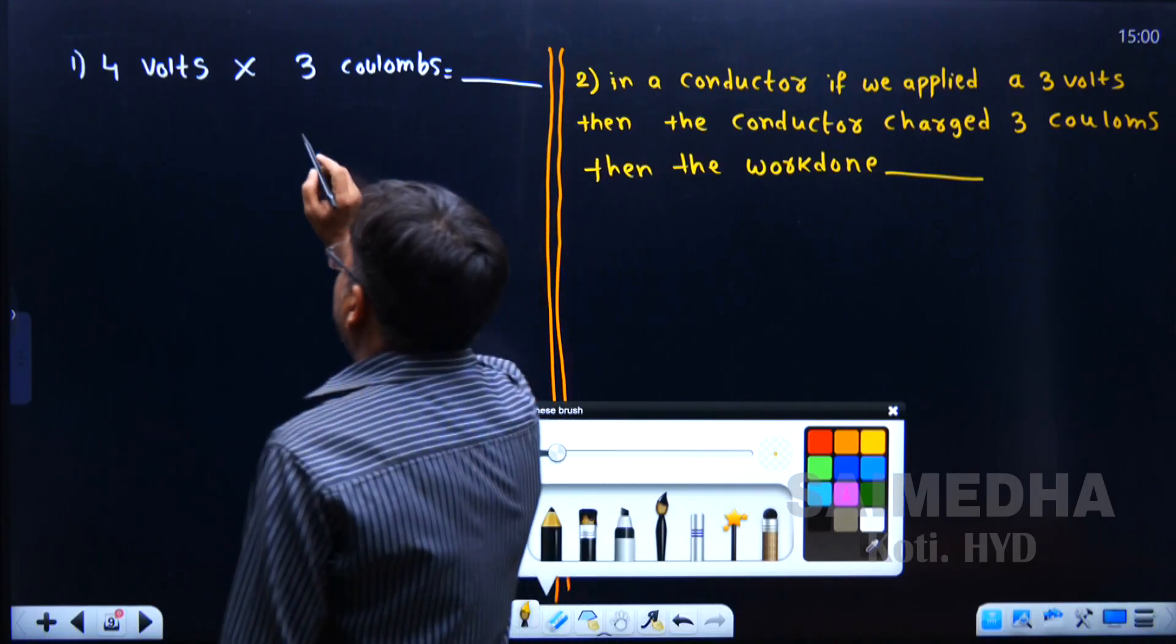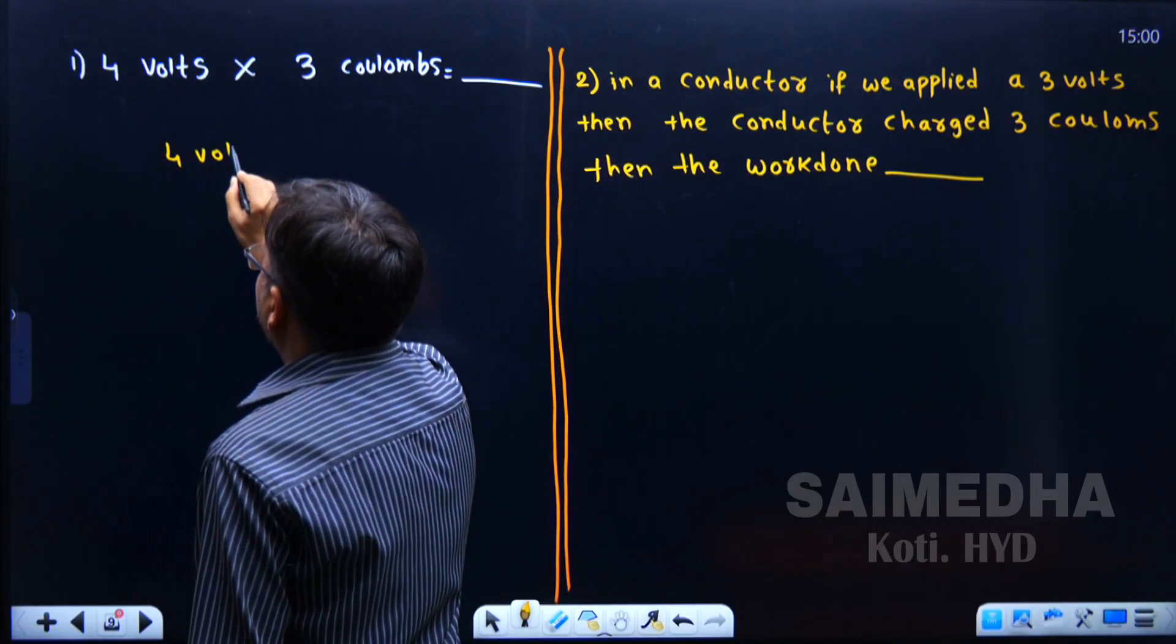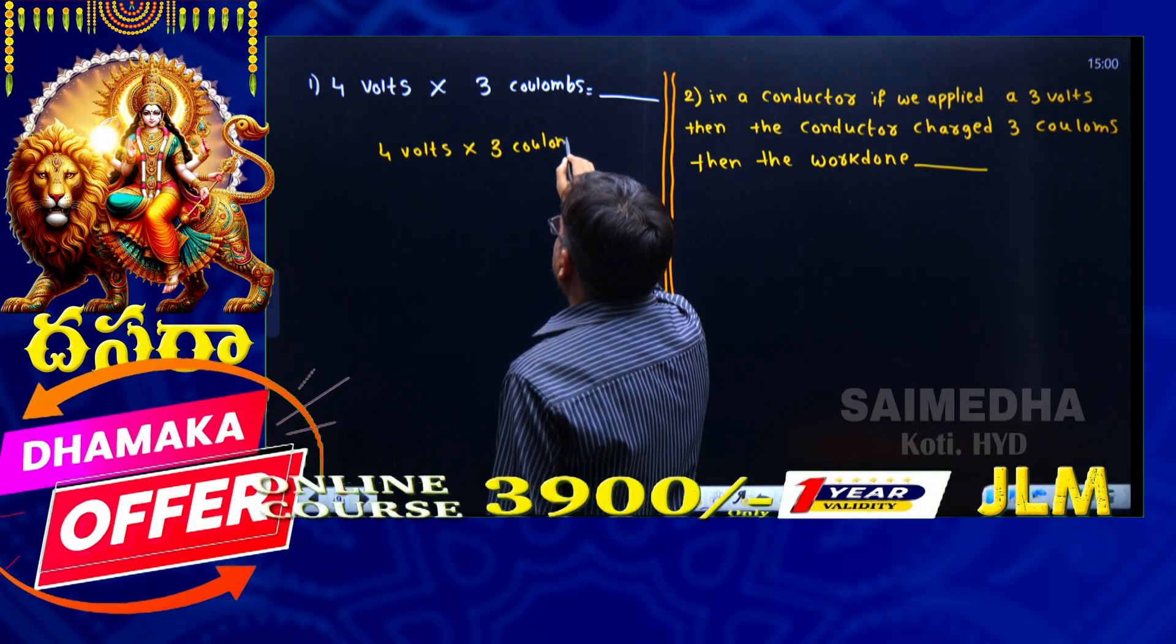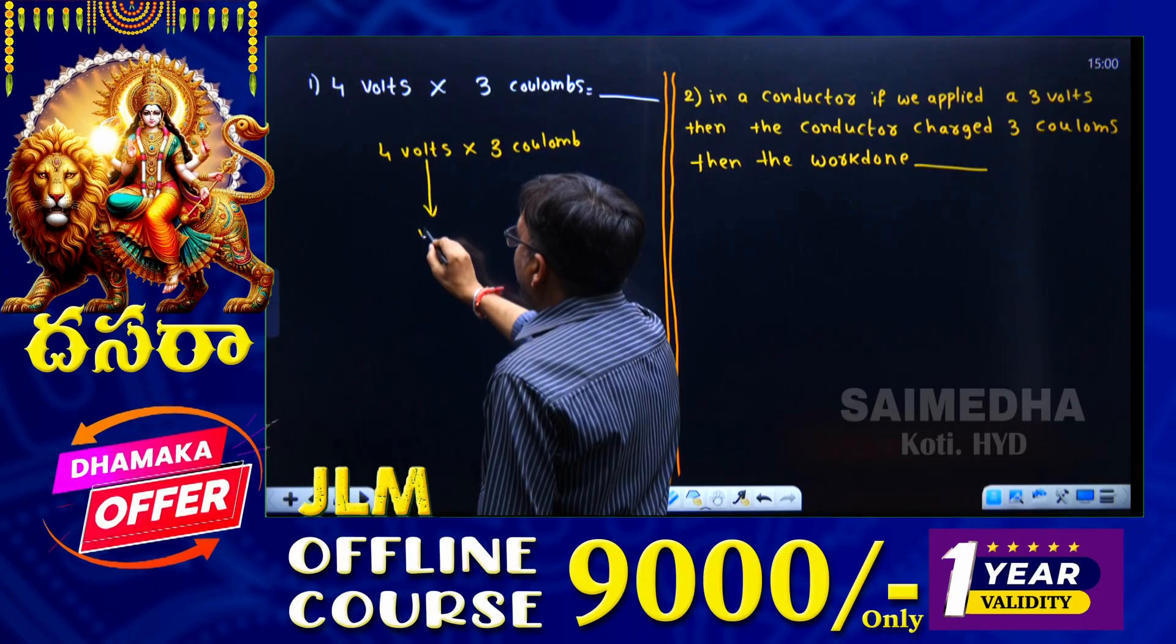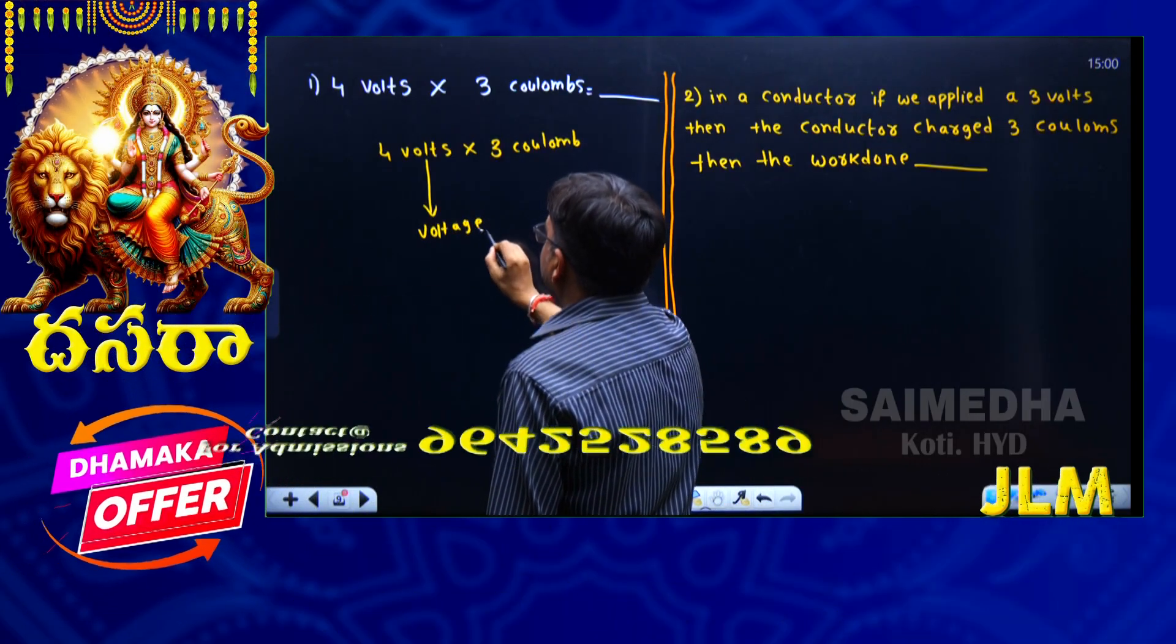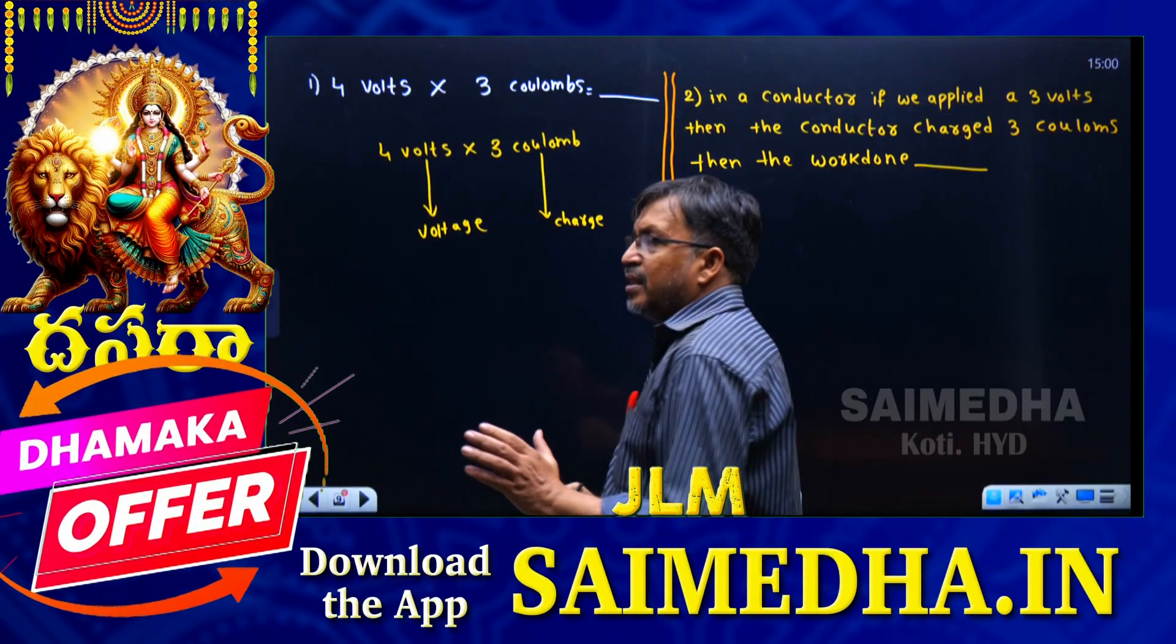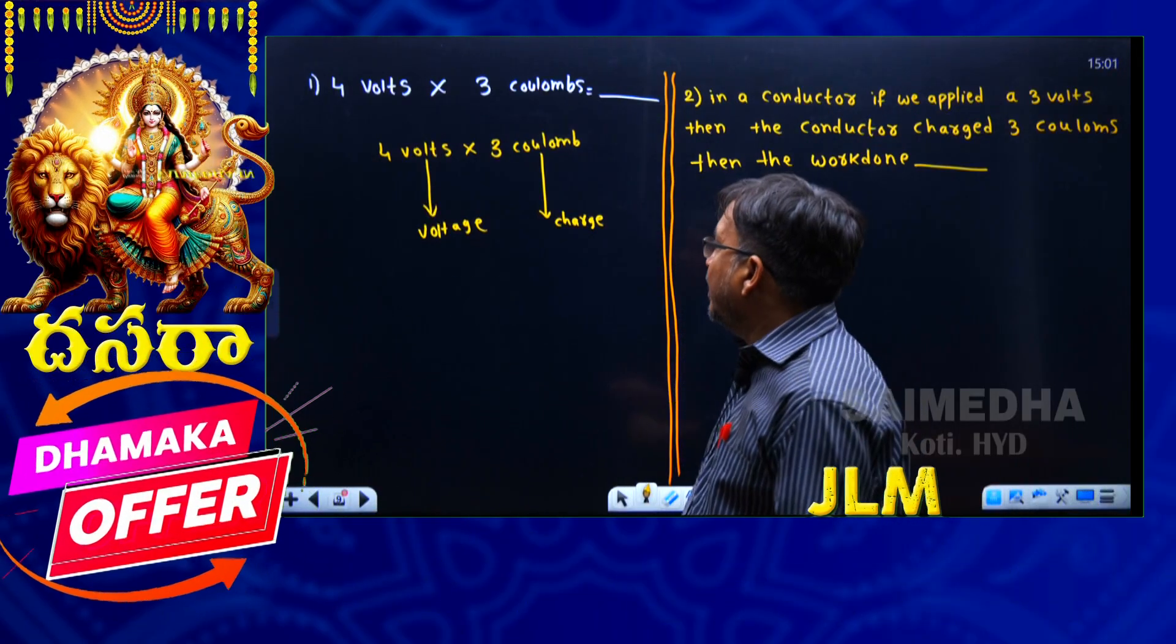4 volts into 3 coulombs. See, here volts is the unit of voltage, and coulombs is the unit of charge. Just remember, volts is the unit of voltage and coulombs is the unit of charge.